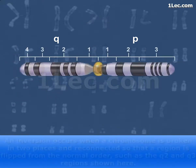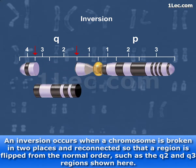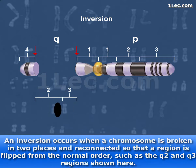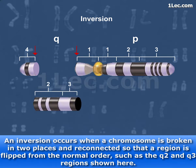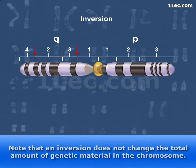An inversion occurs when a chromosome is broken in two places and reconnected so that a region is flipped from the normal order, such as the Q2 and Q3 regions shown here. Note that an inversion does not change the total amount of genetic material in the chromosome.